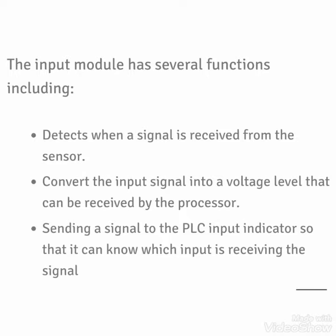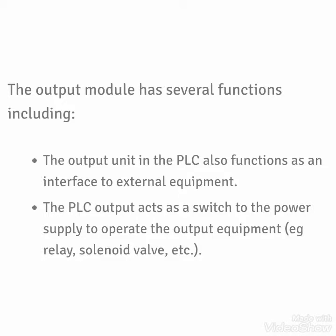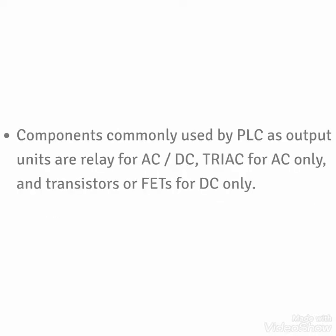The output module has several functions. The output unit in the PLC also functions as an interface to external equipment. The PLC output acts as a switch to the power supply to operate the output equipment — relay, solenoid valve. So the PLC will operate the relay, and after that relay we can take supply to the solenoid valve or anything we want.